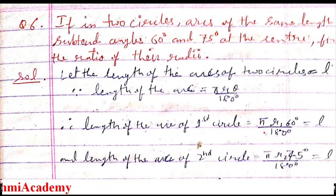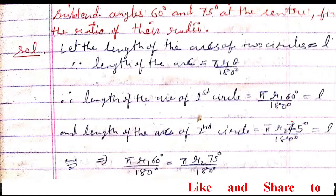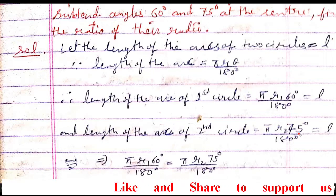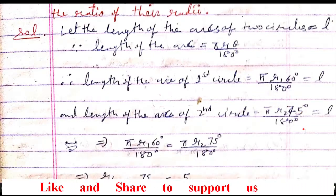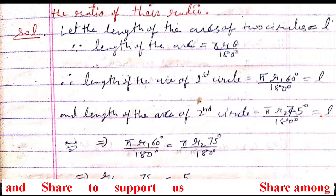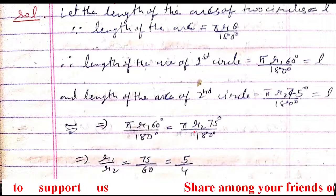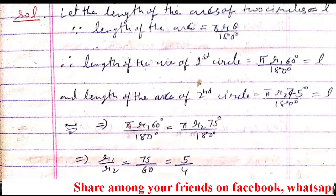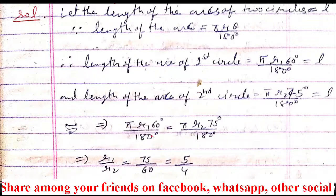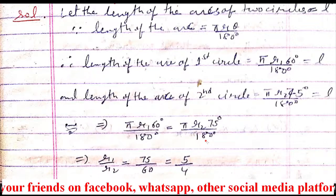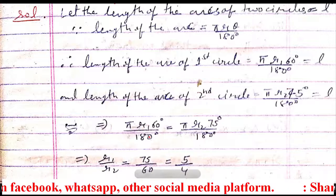That is why we calculated the length of arc for first circle. In that, we substituted θ as 60 degree. And in second time, we substituted instead of θ, 75 degree. And since both the length of arc are same, we kept them equal. Now see students, π and π will cancel, 180 and 180 will cancel, and we want r₁/r₂.